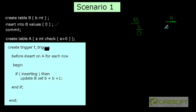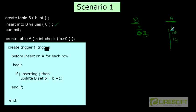That means if I successfully insert one, then this value is going to become one. If I insert a second row, then this becomes two. If I insert a third, then this becomes three, and so on. So for whatever number of rows I insert into table A, each time the before-insert trigger is going to fire and update the value of column B in table B with plus one.